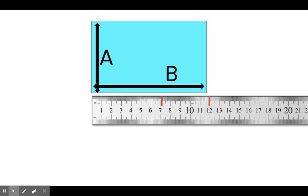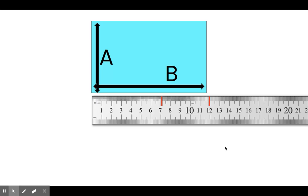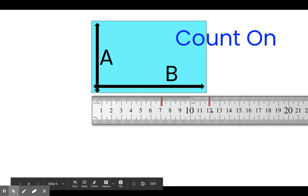Now, we have marked our centimeter ruler for both side A, right here at 7, and side B, right here at 12. The strategy we're going to use to see how much longer side B is than side A is the count on strategy. This is just one strategy you could use. Let's start with this one.